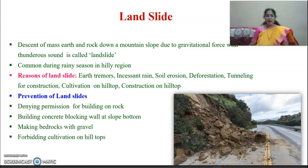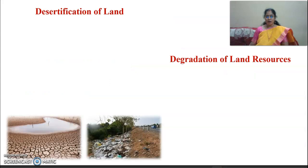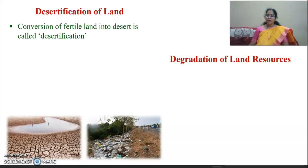How to prevent landslides: deny permission for building on unstable rock, construct concrete blocking walls at the bottom of slopes, make bed rocks with gravel, forbid cultivation on hilltops, and forbid the destruction of forests.